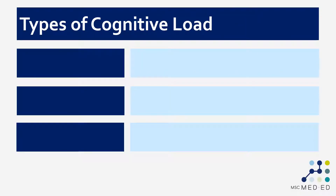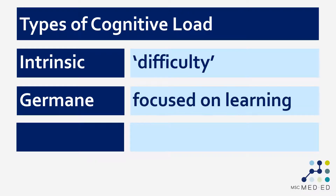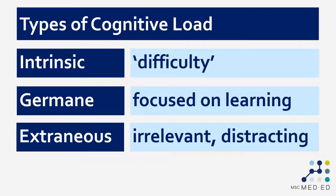There are three main types of cognitive load to think about. The first is intrinsic cognitive load — very simplistically, this is a measure of how difficult a piece of learning is. If I ask you to learn the calculation 2 times 2, that's a lot easier than 741 times 627. Some subjects are just harder than others. Germane cognitive load is the amount of work that working memory is doing that is dedicated to the desired learning. Extraneous cognitive load, which is perhaps the most important type from an instructor's perspective, is any work that working memory is doing that is irrelevant or distracting.